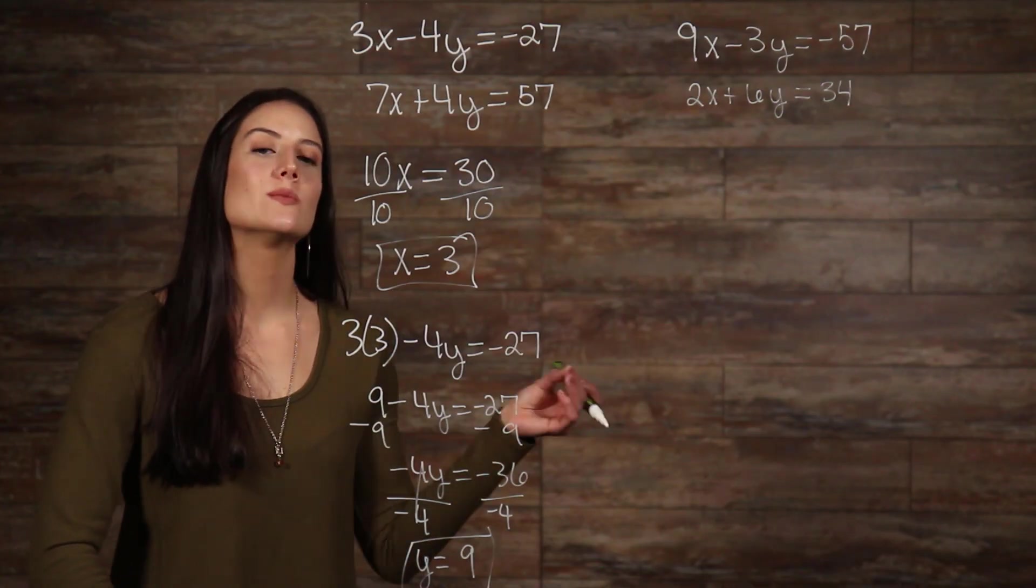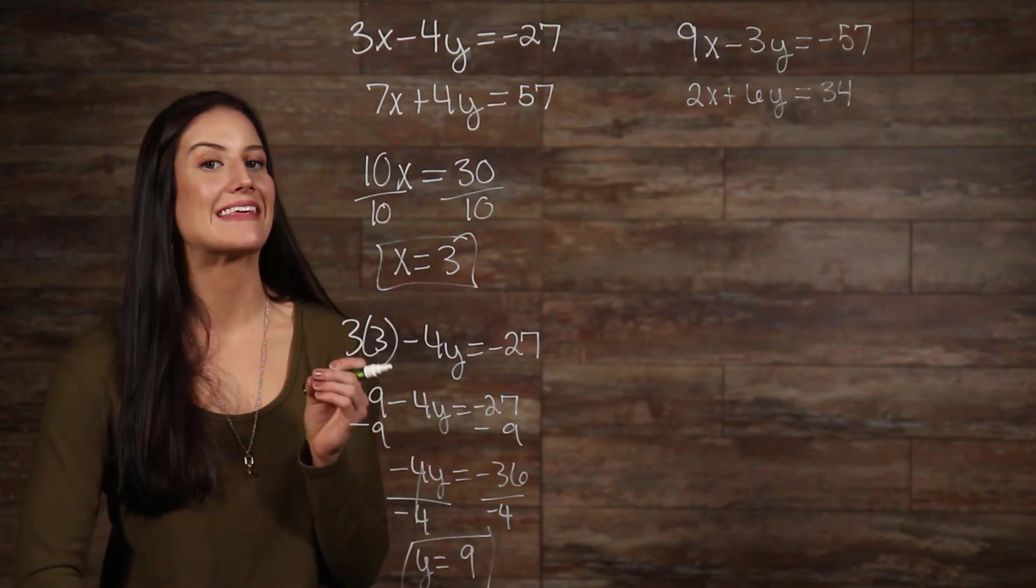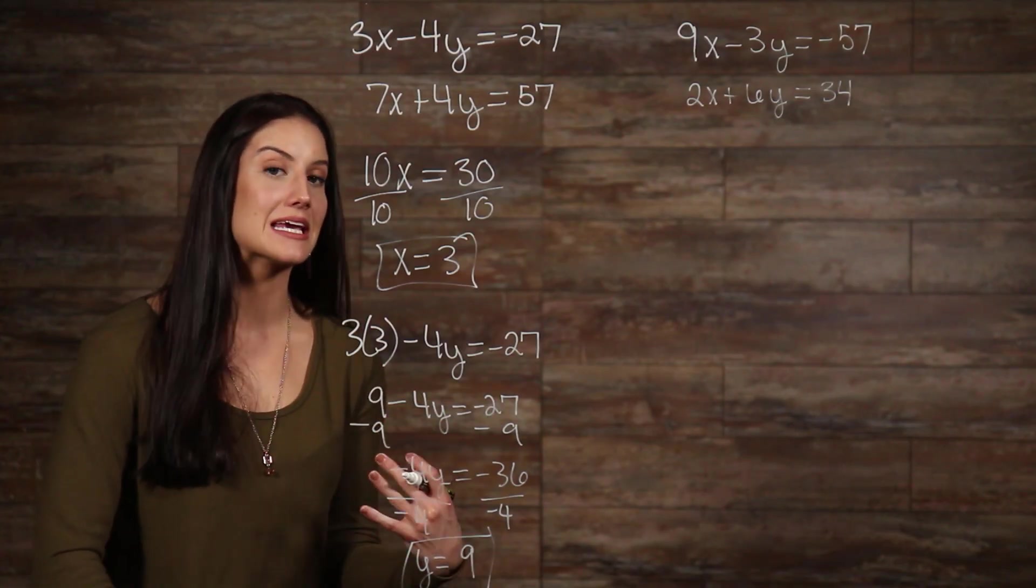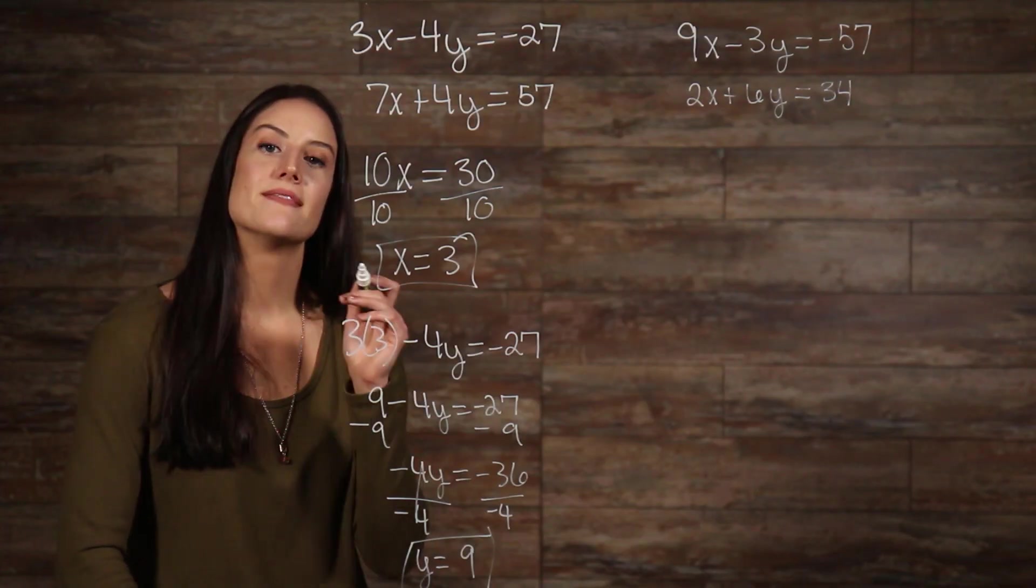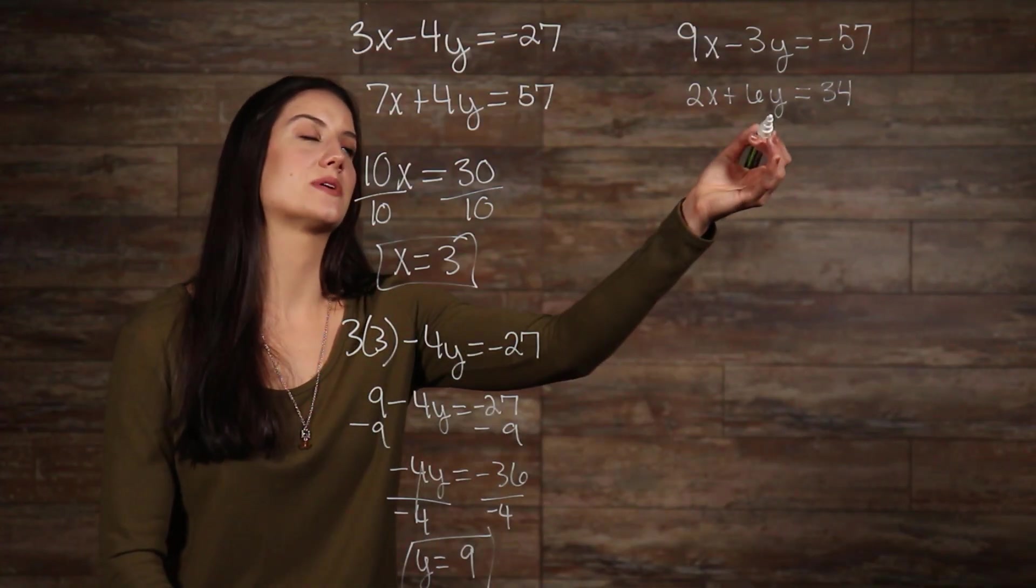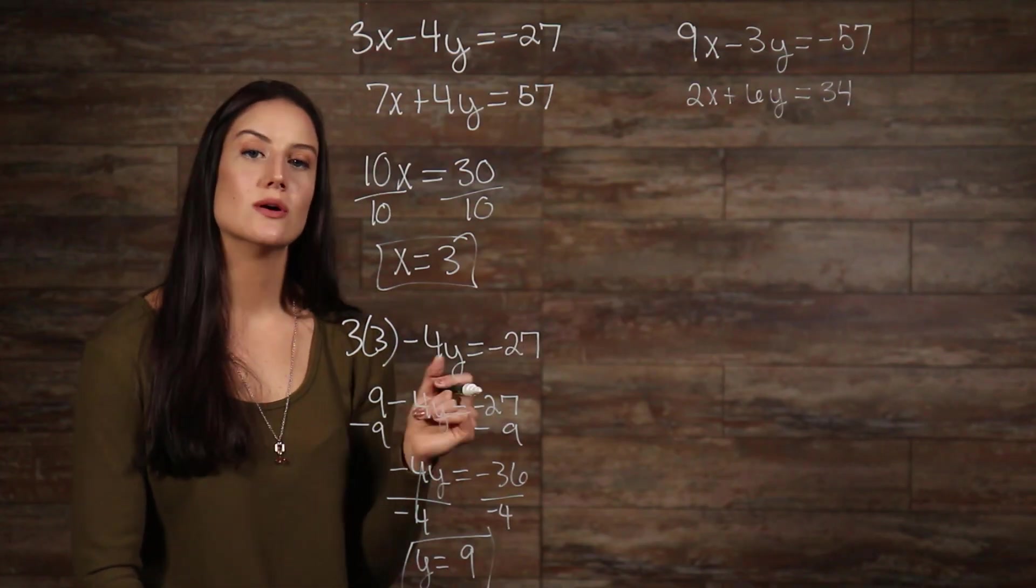So, what can we do to get our terms to cancel? Well, there are a couple of things, but the easiest, as it appears to me, is to multiply our first equation by 2. That will allow us to cancel our y's, because we'll be adding a negative 6 and a positive 6. So, let's do that. We have this equation all being multiplied by 2.